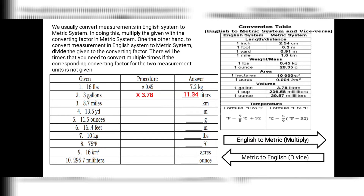Next, convert 8.7 miles to kilometers. That is English to metric so we multiply. The converting factor for miles to kilometers is 1.6. Multiply 8.7 by 1.6 and the answer is 13.92 kilometers.